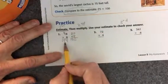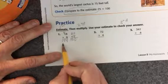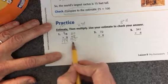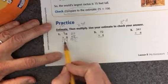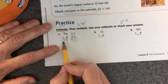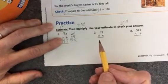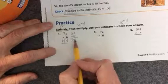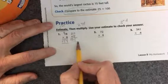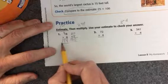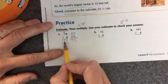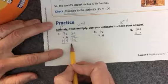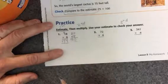Now that the problem is finished, I check. My estimate was 160 and my answer is 144 — both are hundreds numbers. If the answer had been only 44 or 7,000, I would know there was a problem. But the tens digit is just a couple away from my estimate, which tells me I can confirm my answer is reasonable.